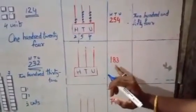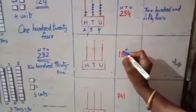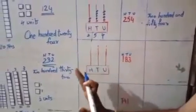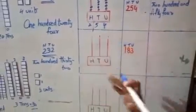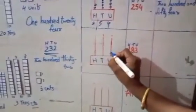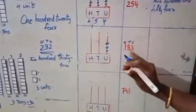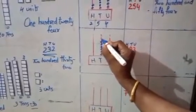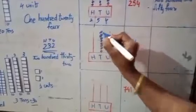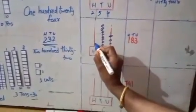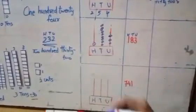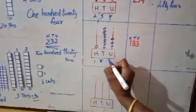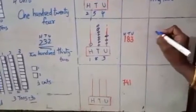The second abacus example is 183. Always go from the back. Unit is 3 — make 3 beads. Tens place is 8 — make 8 beads. Hundreds place is 1 — make 1 bead. So reading: hundreds is 100, tens is 80, unit is 3 — the answer is 183.